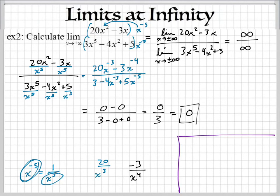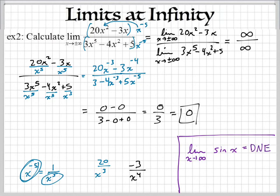There are limits that do not exist. You'd write DNE. For example, if I had the limit as x approaches infinity of sine x, well sine x goes up and down — it oscillates forever. So we're not going to find a limit there. It just goes up and down, up and down, up and down. There's no way to manipulate it to find a limit. It just doesn't make sense — it does not exist.